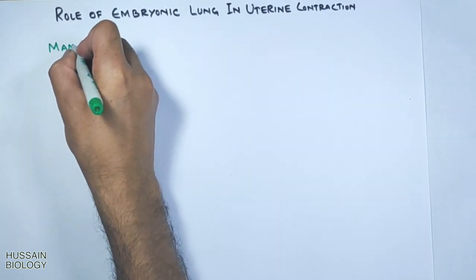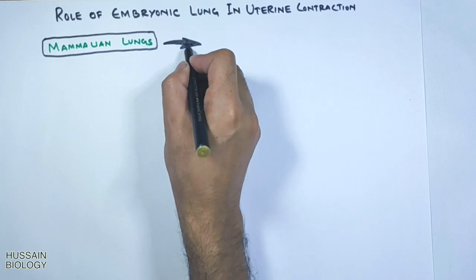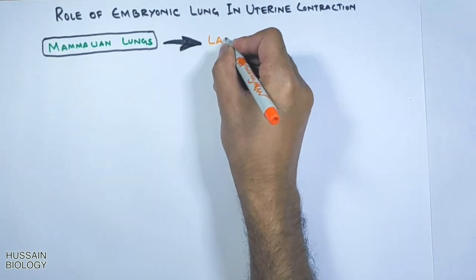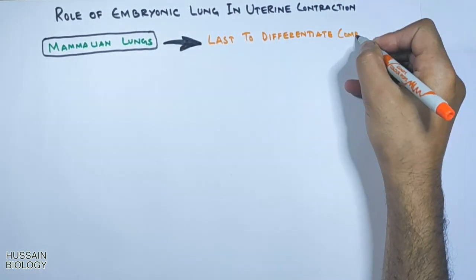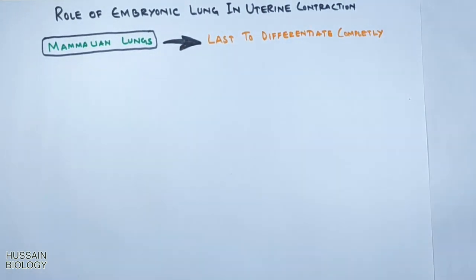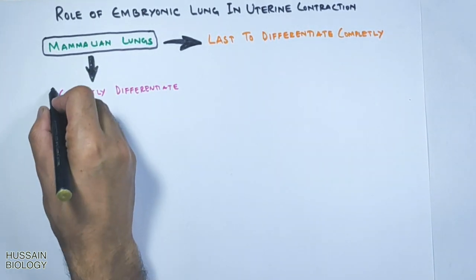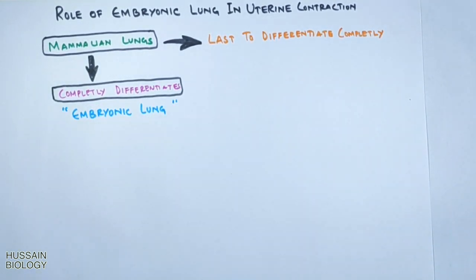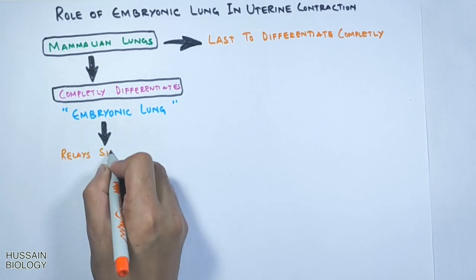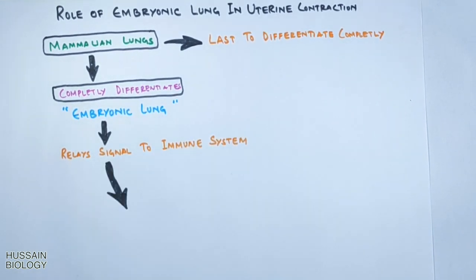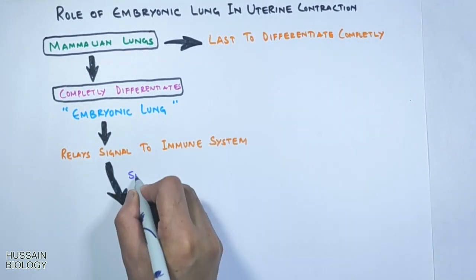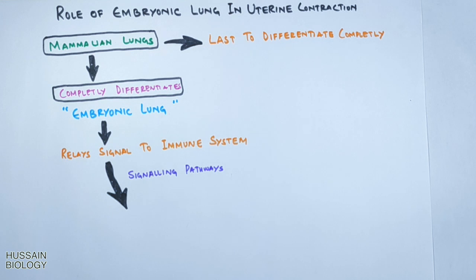Mammalian lungs are the last organs to get completely differentiated into functional lungs. Once the mammalian lungs are completely differentiated — what we call embryonic lungs — they relay a signal to the immune system. Through many signaling molecules or signaling pathways, uterine contraction is driven. Let's see in detail how it is driven at the molecular level.